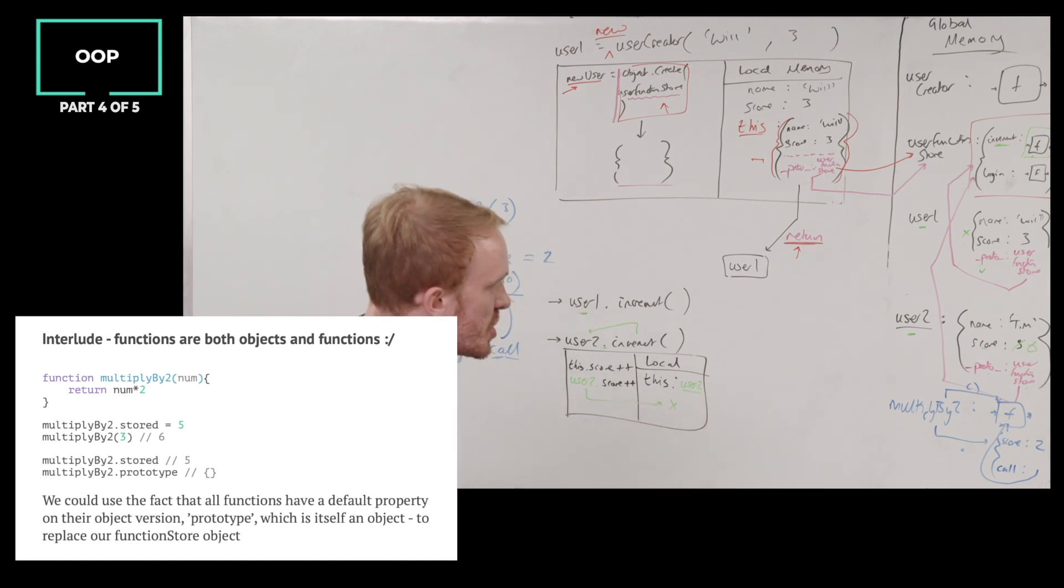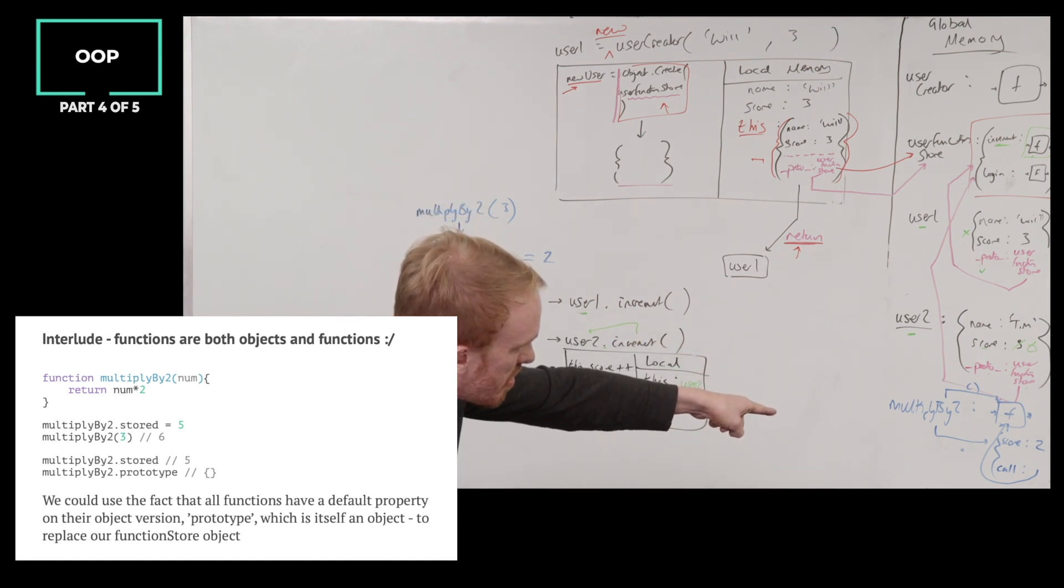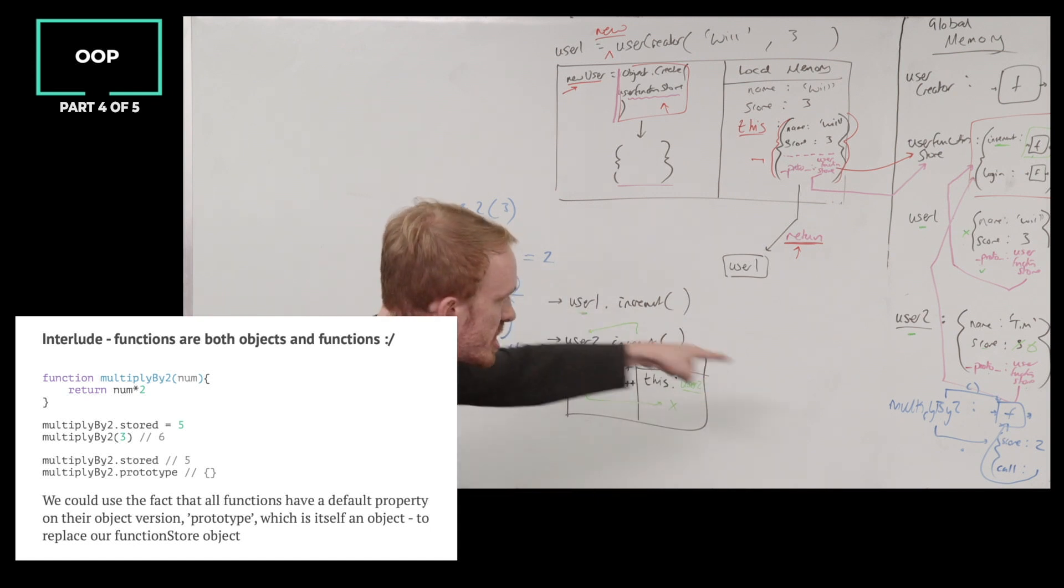When I treat it as a function, by putting parens on the end, I run the functionality. When I treat it as an object, by putting a dot on the end of it, I get access to its properties.